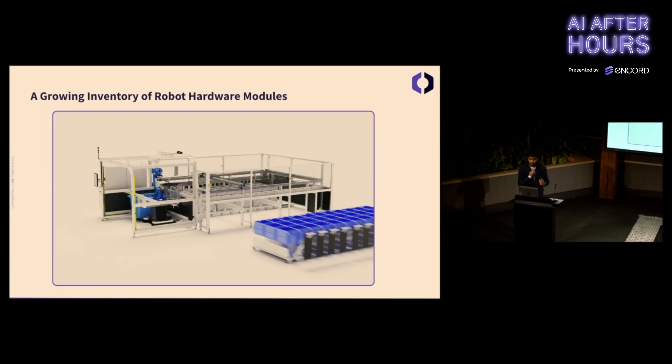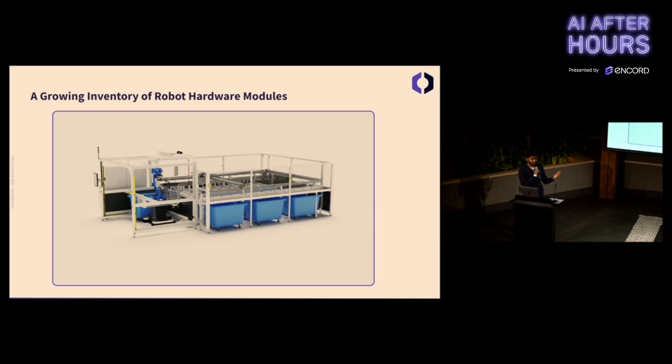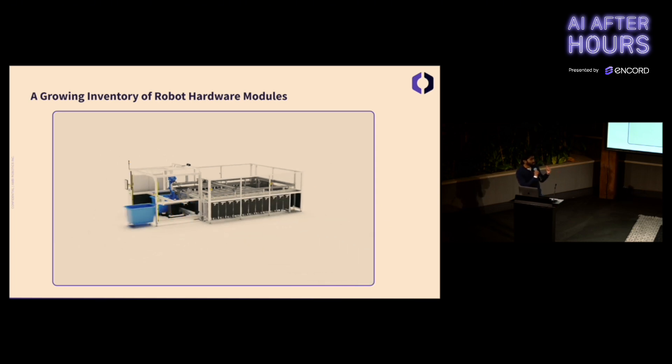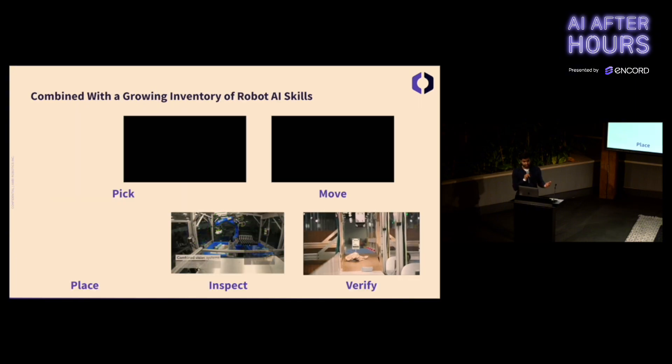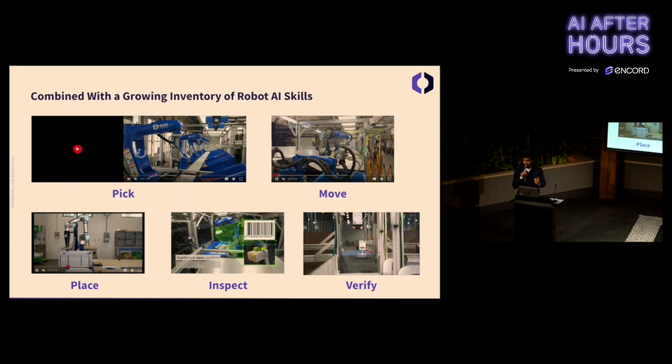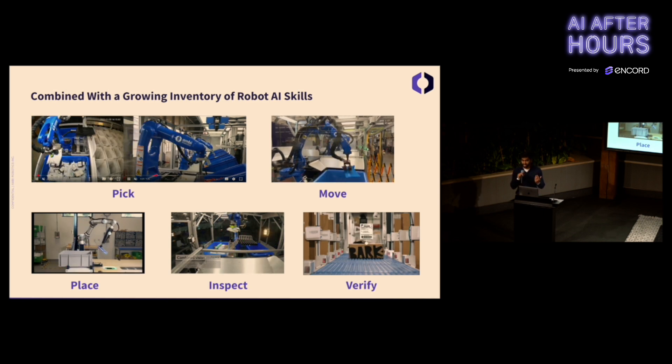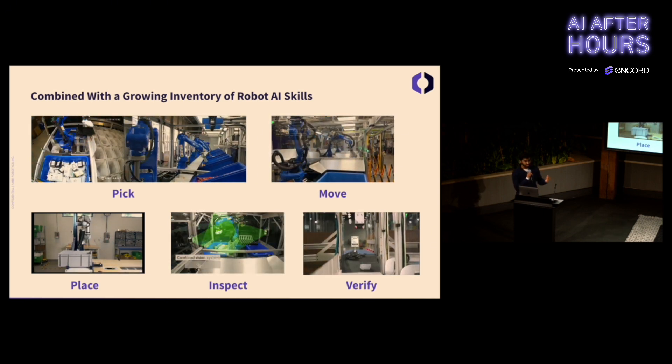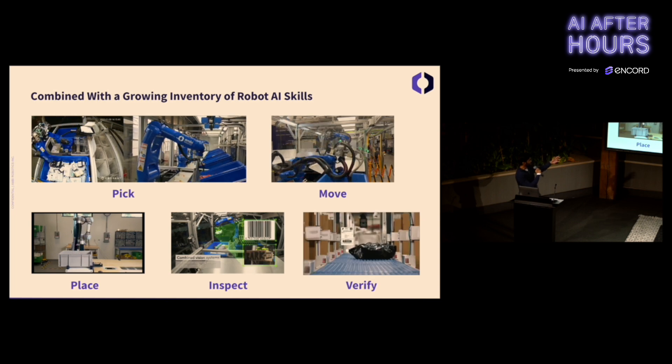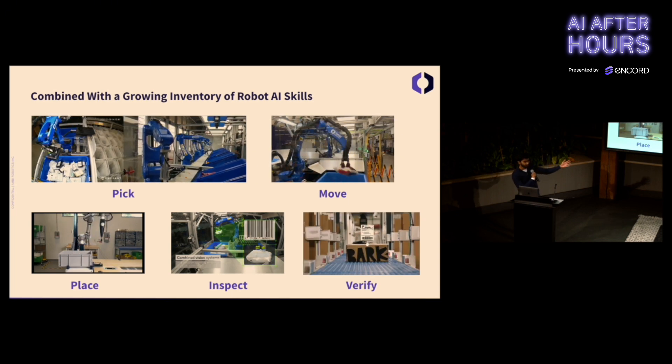What are we selling? What's our product? We couple modular robotic hardware with AI-powered software. Our software accomplishes a variety of tasks, or as we like to call them, skills, such as picking, moving, placing, inspecting, and verifying.